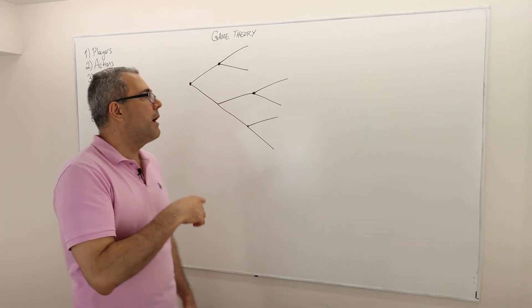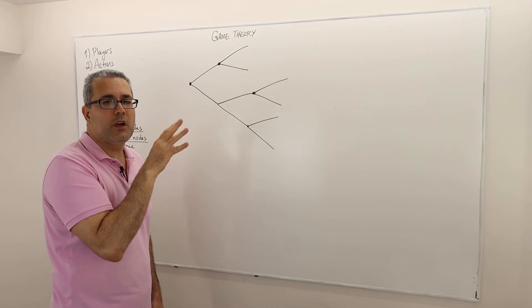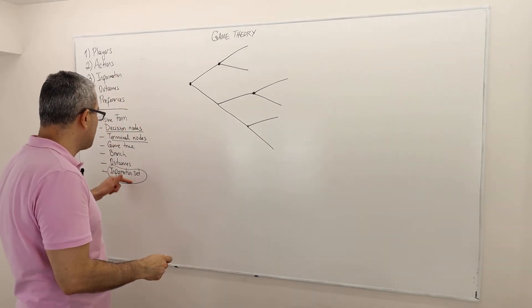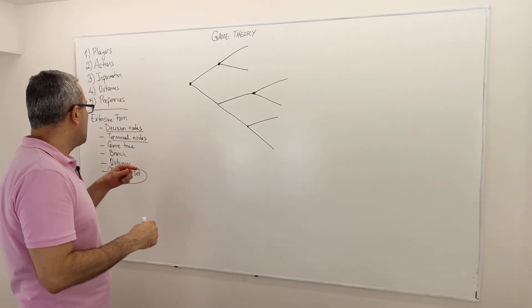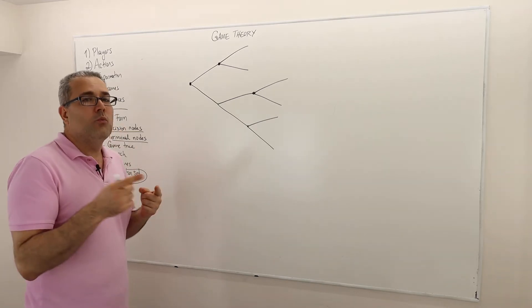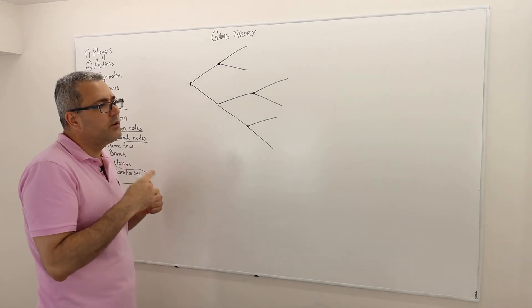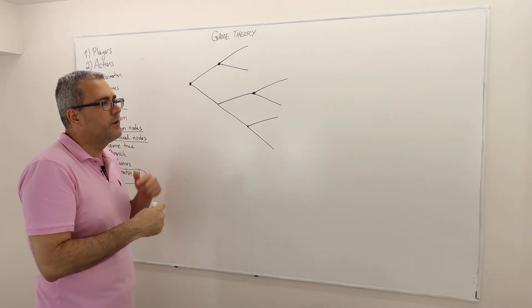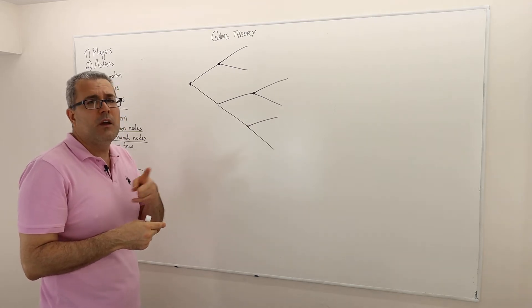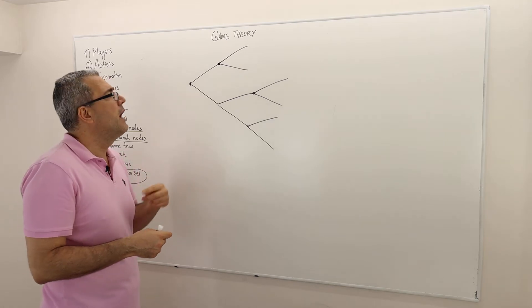Welcome back. So I am going to talk about the same example, Mr. Brown versus Mr. Green. But this time I'm going to talk about the outcomes and the preferences. One trick that we keep doing is, instead of referring to Mr. Brown and Mr. Green, if there are two players, we name or number the players: number one and number two.